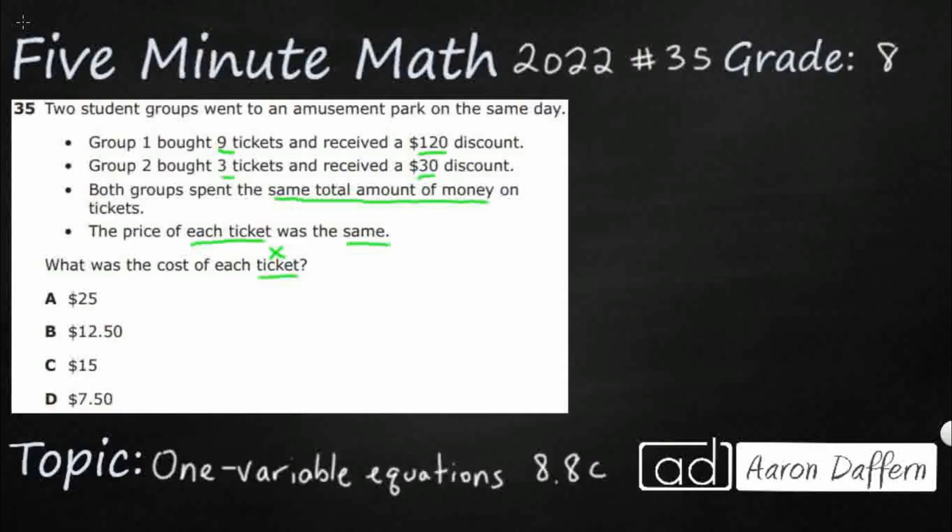There are two student groups and we know that both groups spent the same amount of money, which means they're going to be equal. It's not going to be an inequality. So I'm going to say group one is going to equal group two. So we know that those two are equal. It is going to be an equation rather than an inequality.